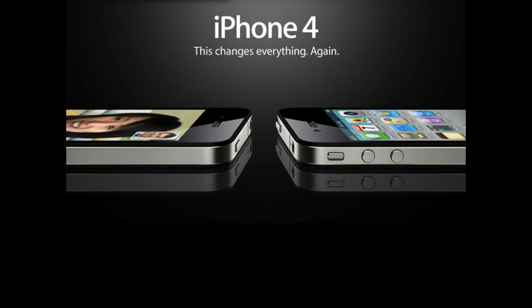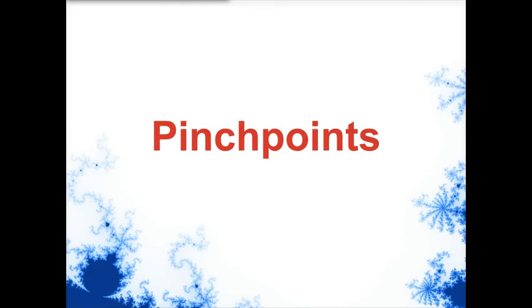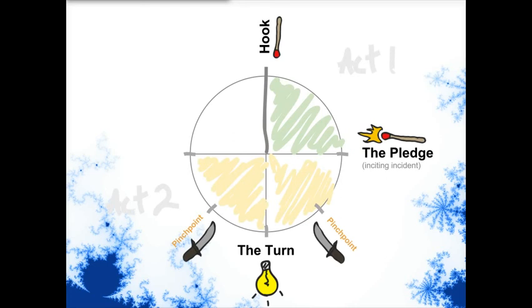The inciting incident changes everything, and The Turn changes everything again. Now, there's another important part of act two: the pinch points. They should happen about midway in those two halves of act two. The pinch points are when the antagonist shows his face and reminds both the protagonist and the reader how powerful he is — this may be a person antagonist, or it may be an antagonistic force of some kind. You need to remind the reader how bad it can be. The second pinch point should be much more climactic, more dramatic than the first, so these should be increasing as they go along.